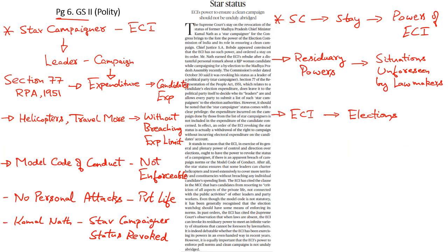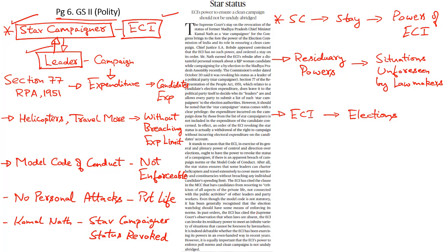Now let's take up another editorial from page number 6, which deals with the topic of star campaigner. During elections, every political party is allowed to designate its senior and most popular leaders as star campaigners, and this status is recognized by the Election Commission of India because the status of a star campaigner brings in a certain amount of privileges. These privileges extended to the star campaigner by the Election Commission are very useful for the political party in its campaign.